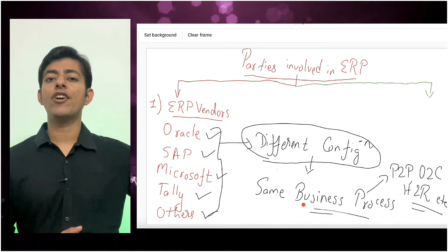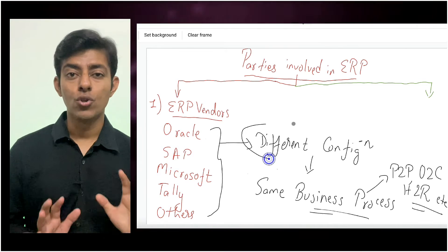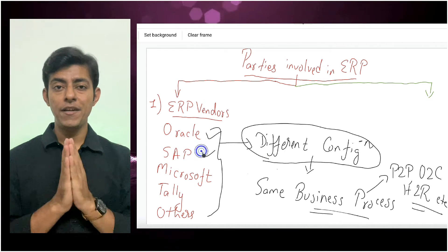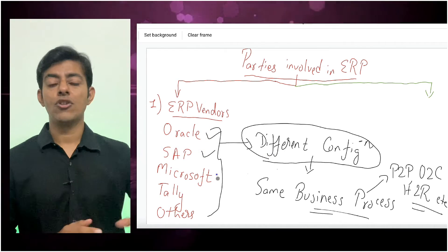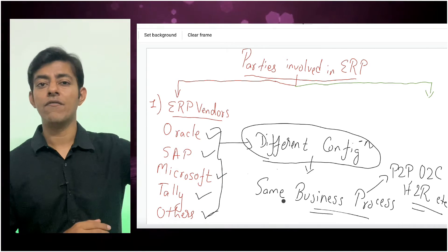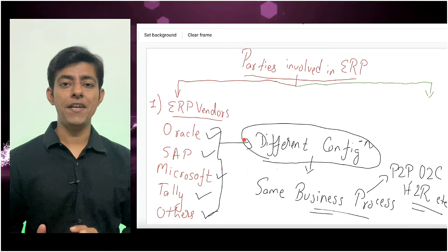These different ERP companies have their own different configurations. Though the business processes are the same, the configurations might be different. The configuration of Oracle ERP will be different from SAP, different from Microsoft ERP, different from Tele ERP. So the configurations may be different, but the business processes will be same — that should be very, very clear.